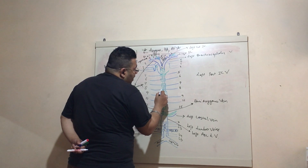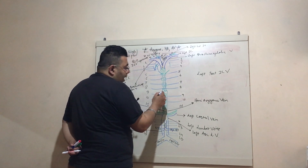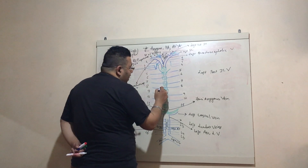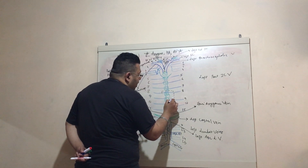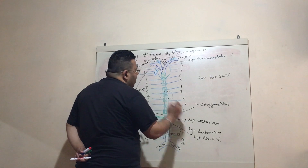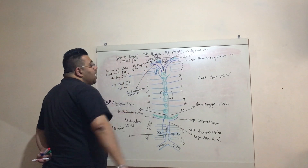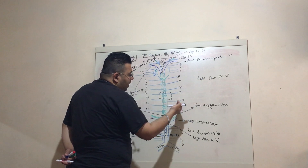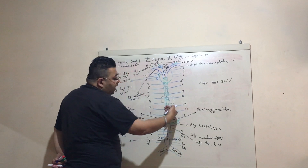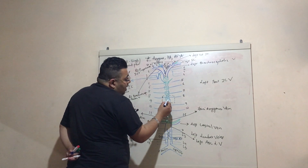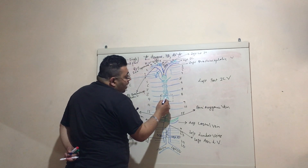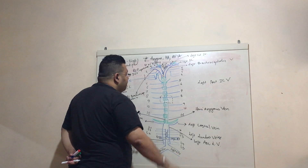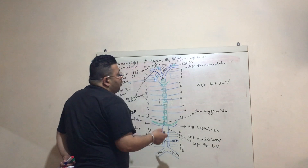The hemi-azygous travels upward, comes near the T8 vertebra, and drains into the azygous vein. This is a very important anatomical structure — remember that the hemi-azygous, draining left posterior intercostal veins 9, 10, and 11, drains into the azygous at the lower border of the 8th thoracic vertebra.